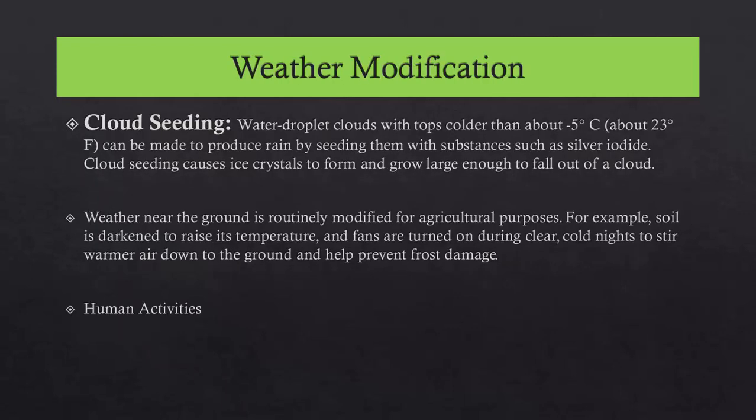What is weather modification? This is basically a process to change the weather, usually done by farmers. The first type is cloud seeding — water droplet clouds which are colder than about minus 5 degrees Celsius can be made to produce rain by seeding them with substances such as silver iodide. Cloud seeding causes ice crystals to form and grow large enough to fall out of a cloud. Weather near the ground is also routinely modified for agricultural purposes — for example, soil is darkened to raise its temperature, and fans are turned on during clear cold nights to stir warmer air down to the ground and help prevent frost damage. Some human activities are also causing natural weather modification. Global warming is a major global issue caused by human activities, mostly through the use of chlorofluorocarbons, whose emissions into the atmosphere are causing ozone depletion.